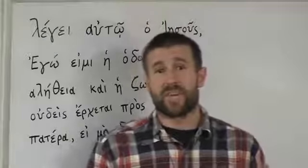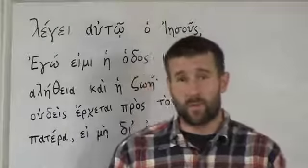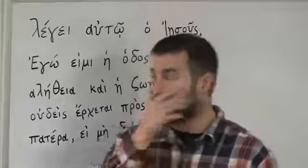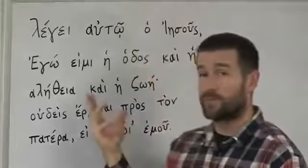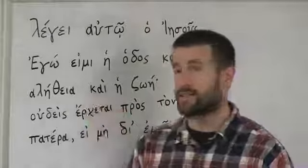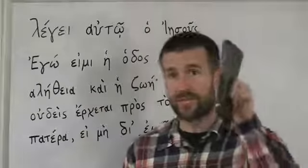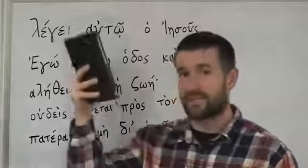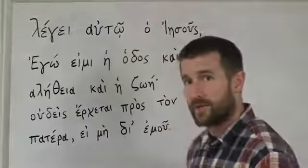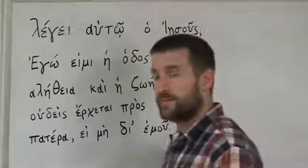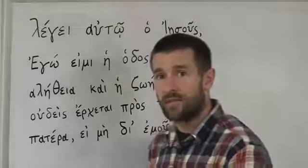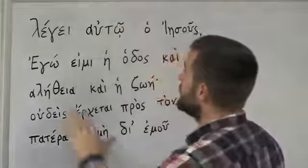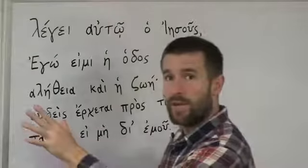Hello, this is Pastor Stephen Anderson from Faithful Word Baptist Church in Tempe, Arizona. Today we're going to be talking about John 14:6. This is John 14:6 from the Greek New Testament. I've got the Textus Receptus from the Trinitarian Bible Society, the Greek text underlying the King James Bible. So we're going to go through this word by word.